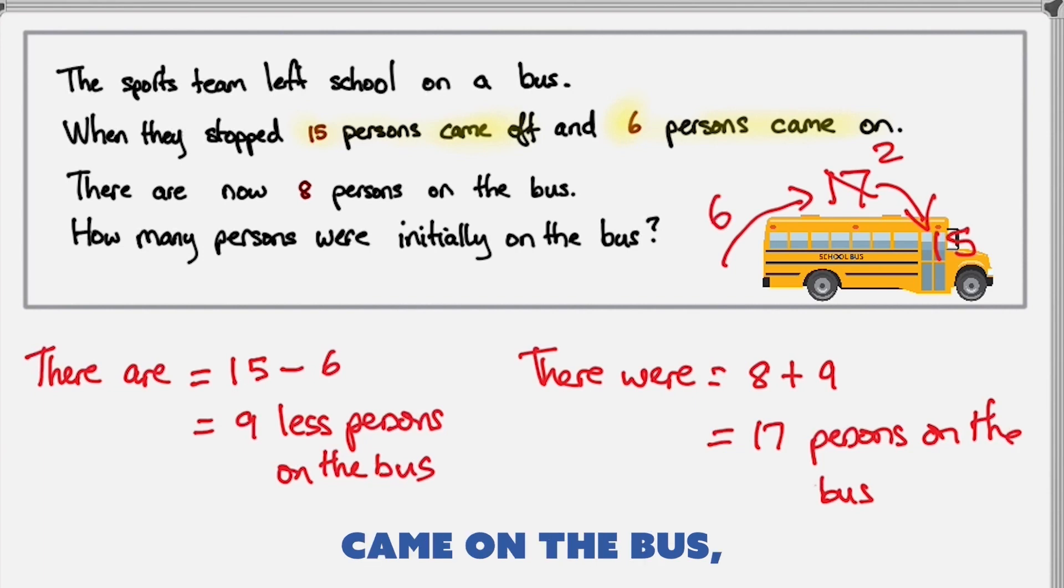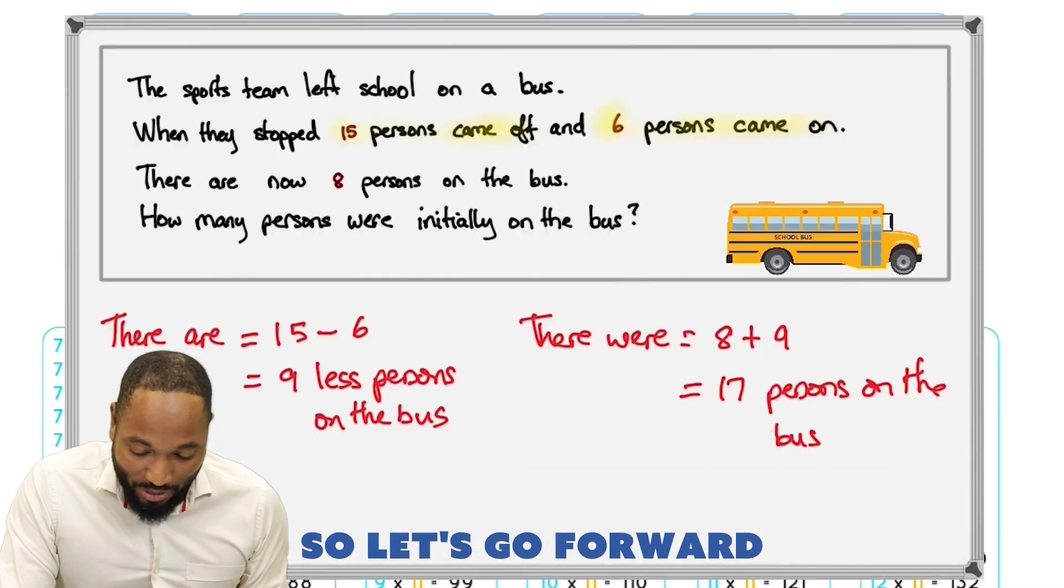But wait, 6 persons came on. So if 6 persons came on the bus, 6 plus 2 is 8. There are now 8 persons on the bus. Everything works out, all the numbers check out. That means we are on the path of righteousness. So let's go forward.